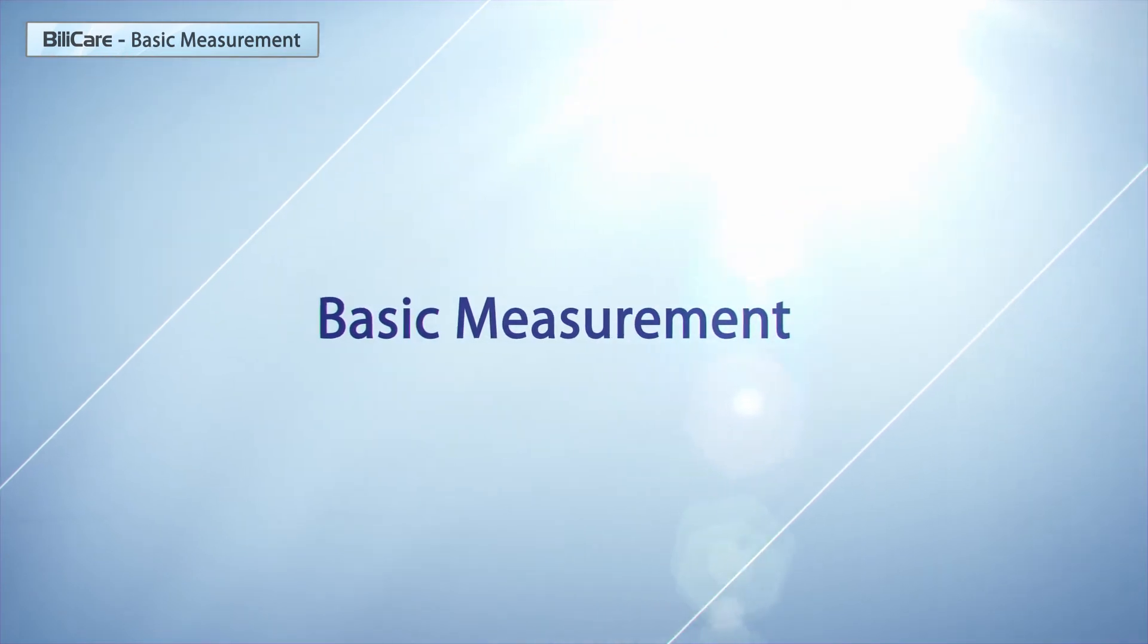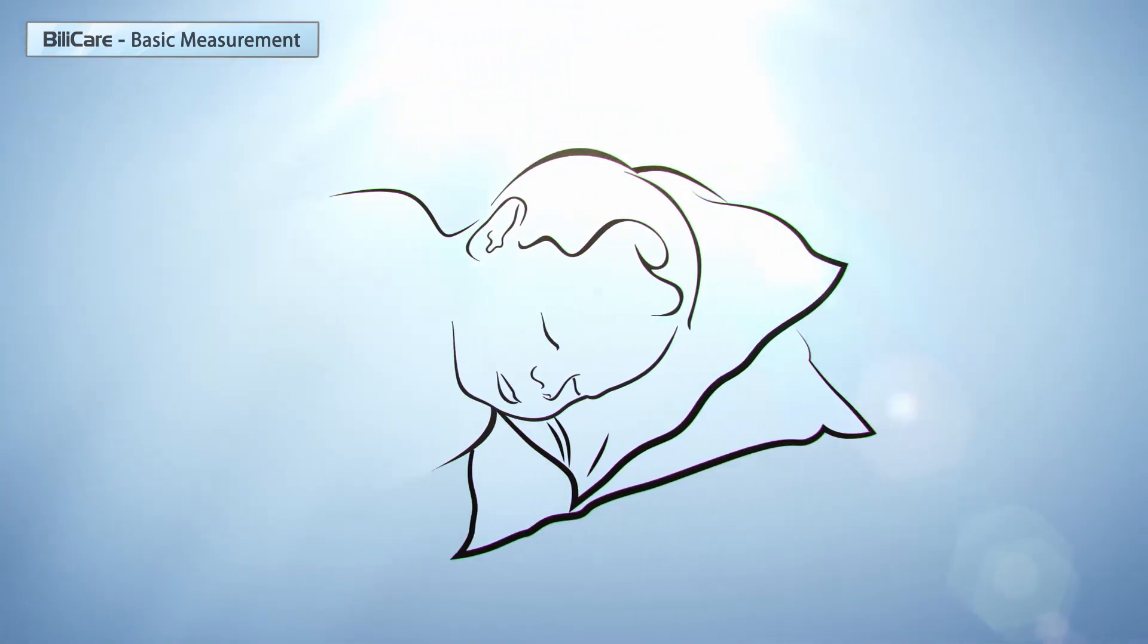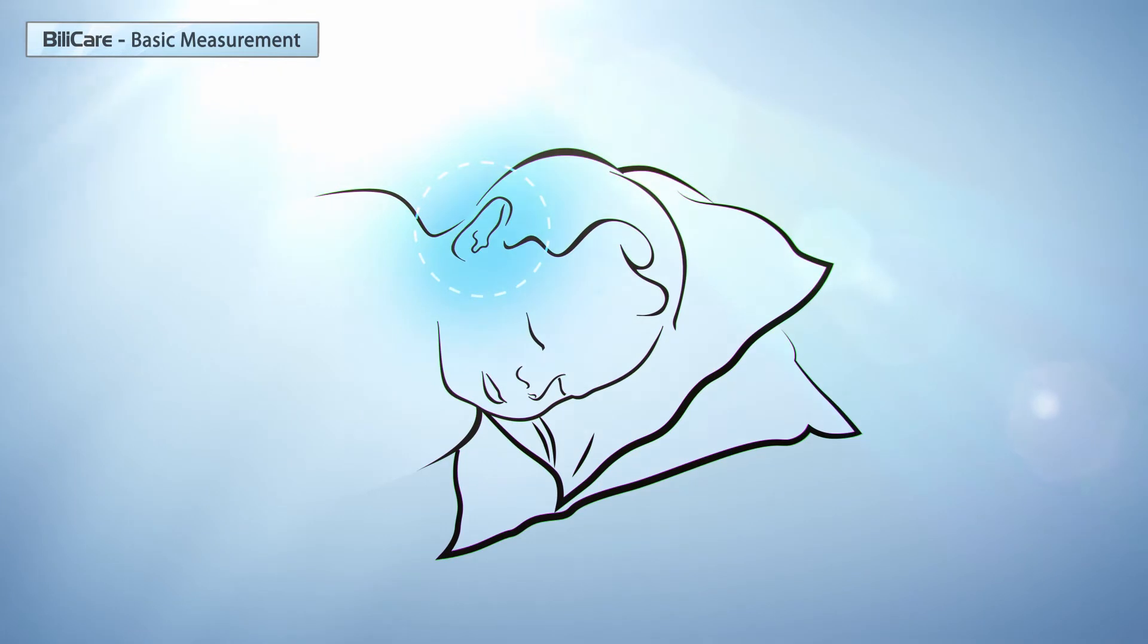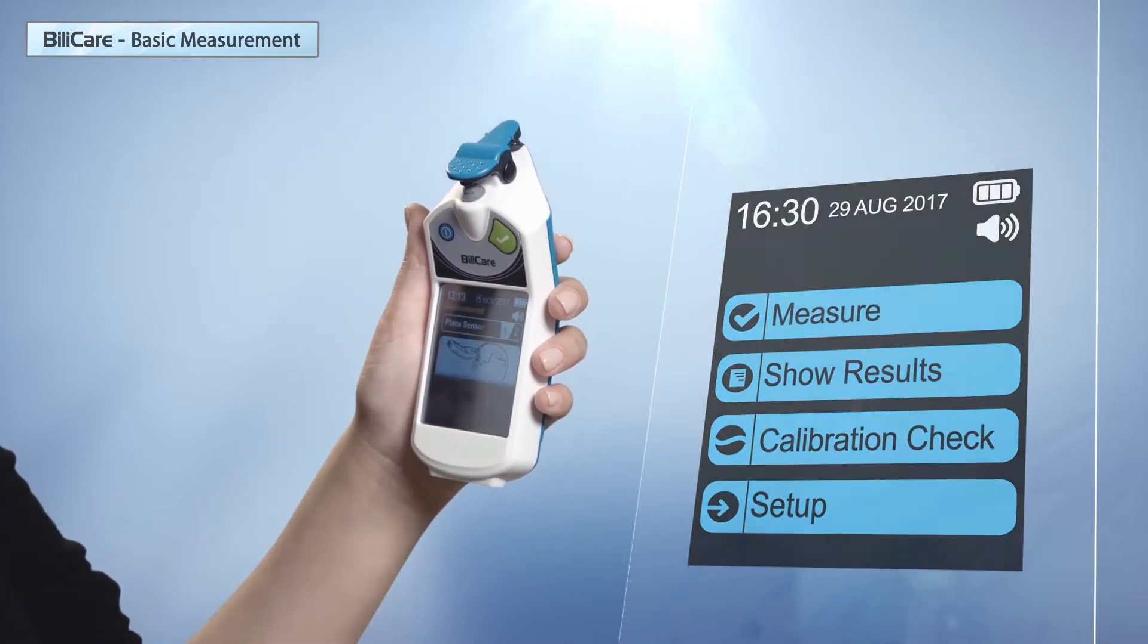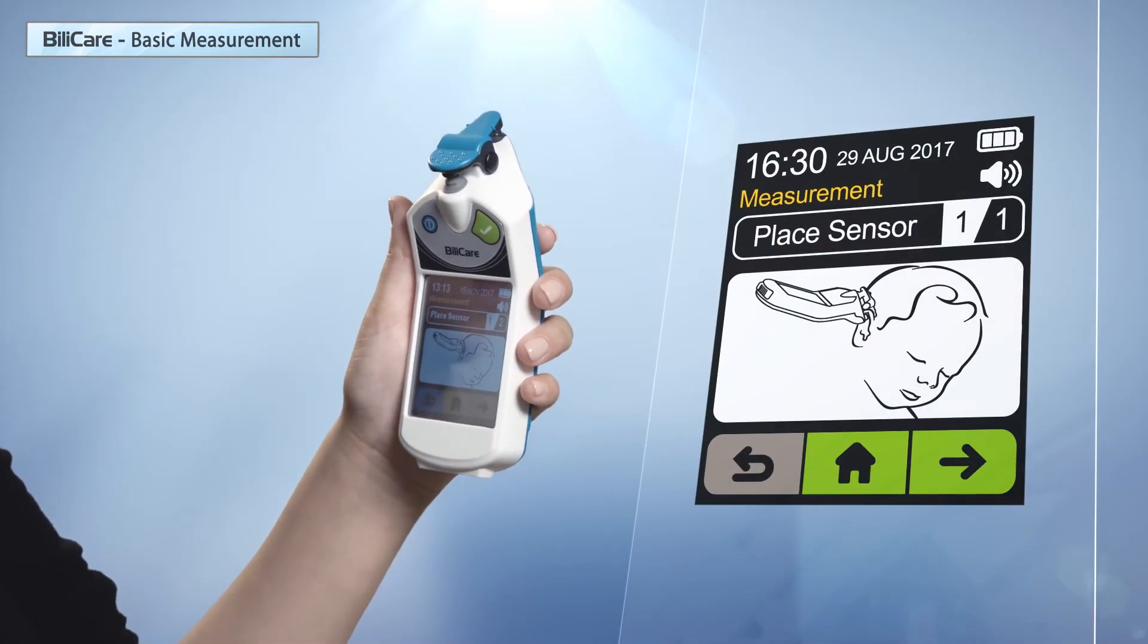Let's take a basic measurement. It does not matter which ear is used. For best accuracy, avoid using the ear on which the baby lies. Once on the main screen, press the measure key. The place sensor screen appears.